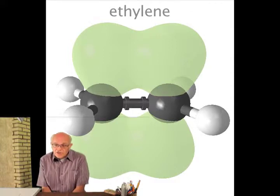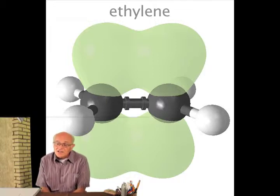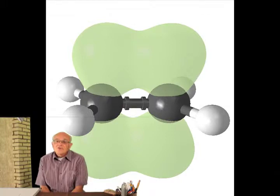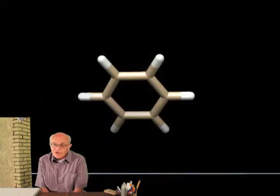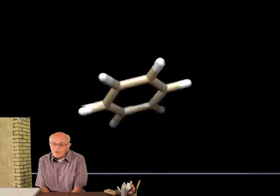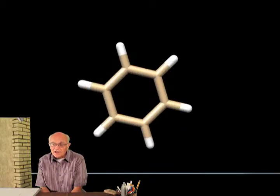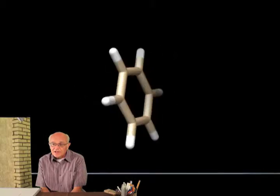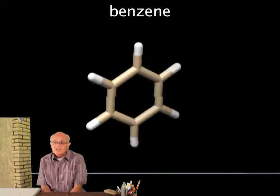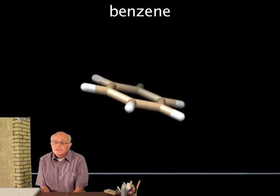From a structural standpoint, the importance of this is that the double bond does not rotate. If you have a ring structure with a lot of these types of carbons, the ring structure forms a flat ring with a cloud of electrons on the top and a cloud of electrons on the bottom.